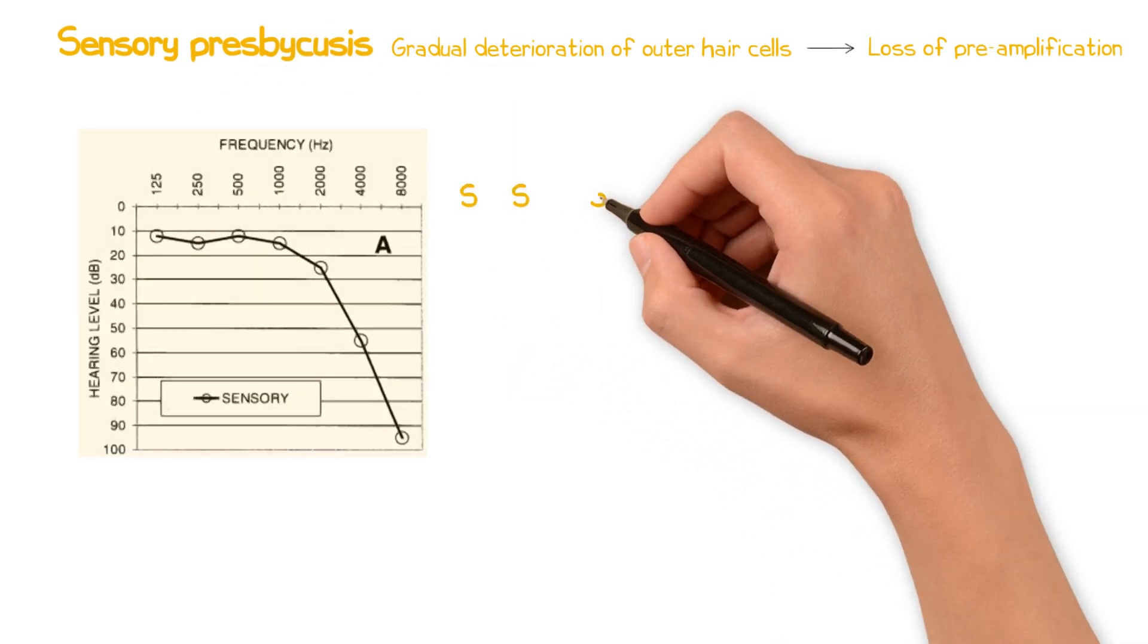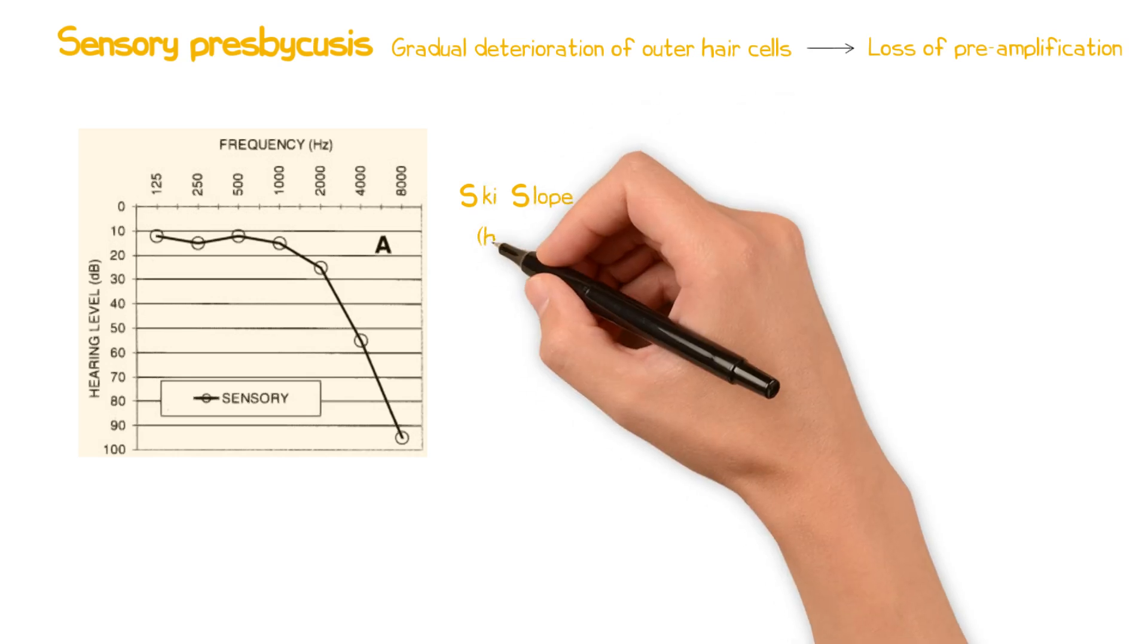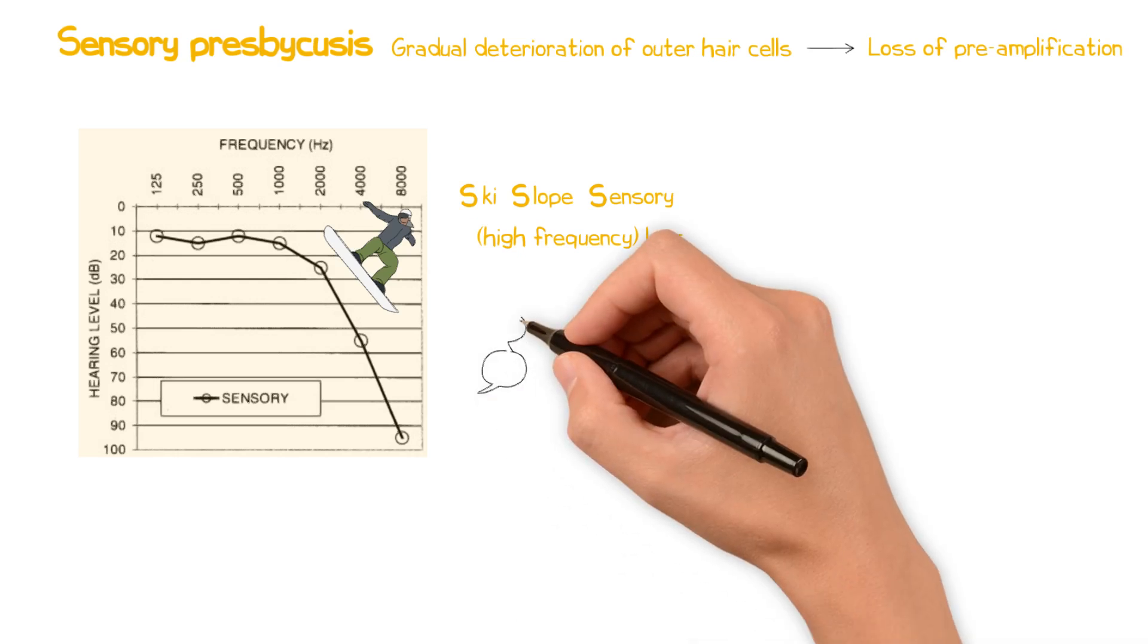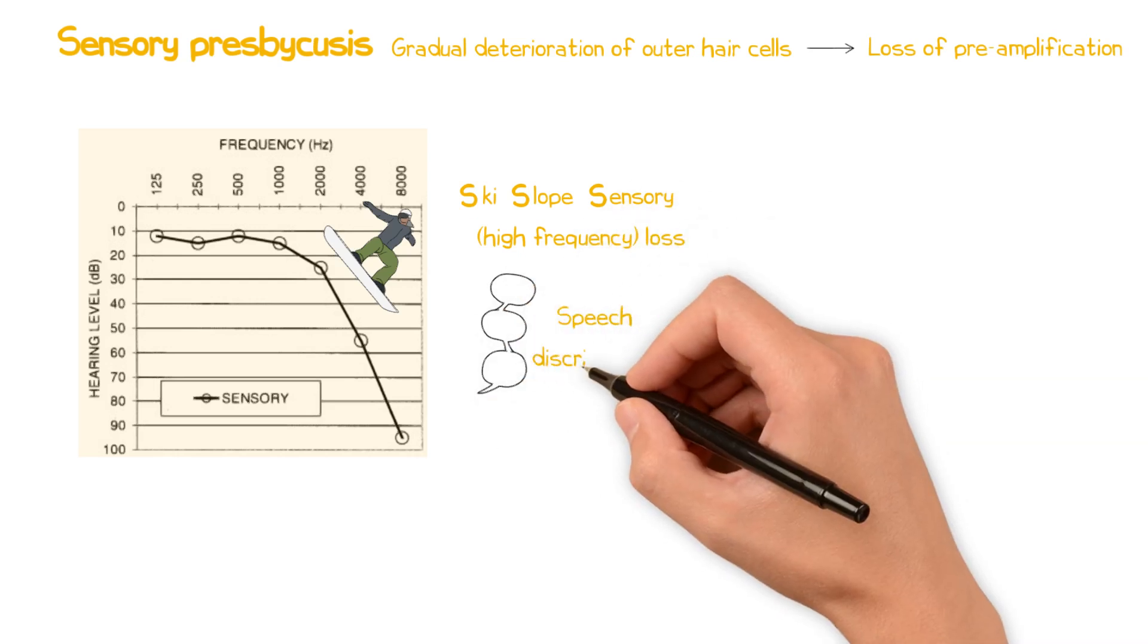On an audiogram, this results in a ski slope loss typical of a sensory presbyacusis. However, as the spiral ganglion cells remain intact, speech discrimination is still maintained.